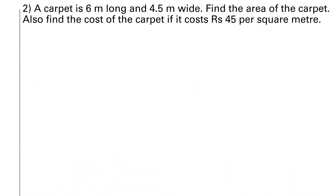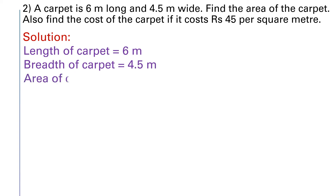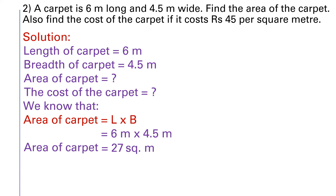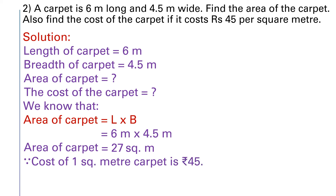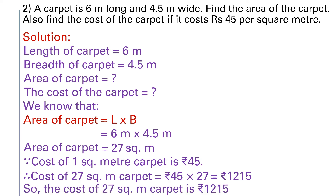Question number 2: A carpet is 6 meters long and 4.5 meters wide. Find the area of the carpet and the cost if it costs Rs. 45 per square meter. Length = 6 m, breadth = 4.5 m. Area of carpet = 6 × 4.5 = 27 square meters. If cost of 1 square meter carpet is Rs. 45, then cost of 27 square meters = Rs. 45 × 27 = Rs. 1215. So the cost of 27 square meter carpet is Rs. 1215.